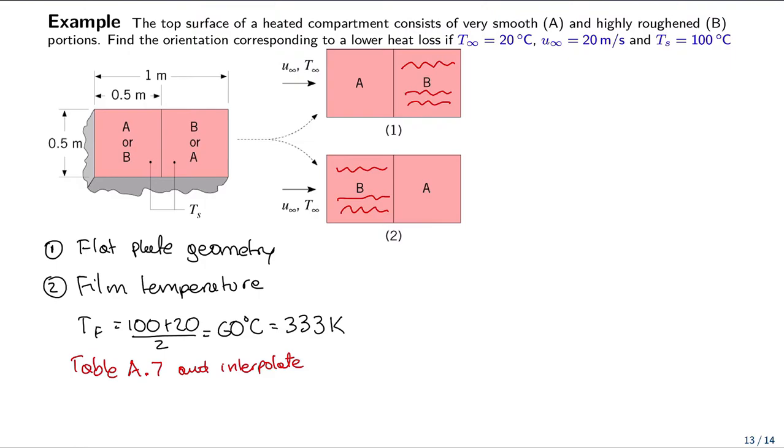We obtain the values for nu, the kinematic viscosity, equal to 19.2 times 10 to the negative 6 meters squared per second, and the conductivity of the air, k, is 28.7 times 10 to the negative 3 watts per meter Kelvin, and Prandtl is 0.7.